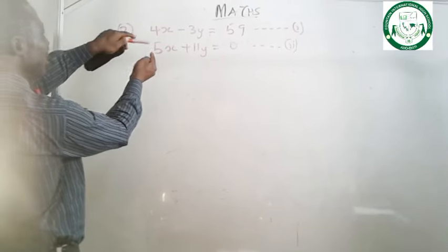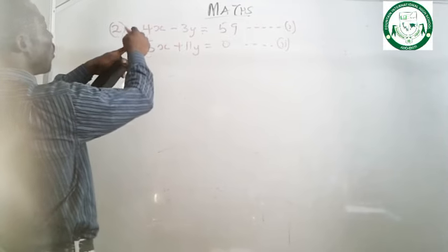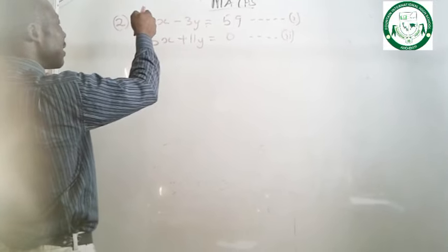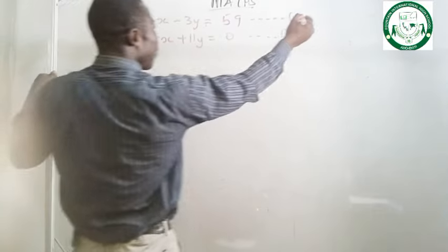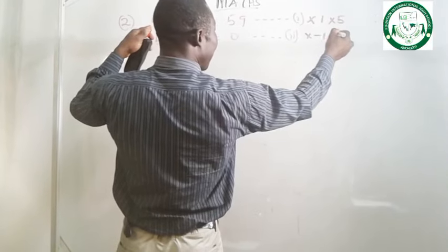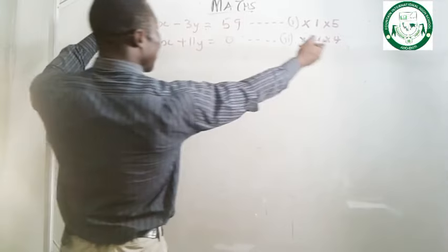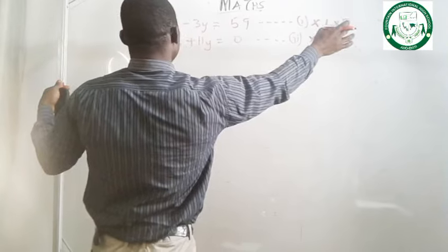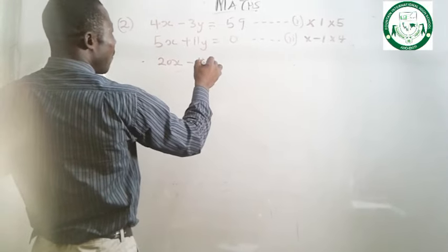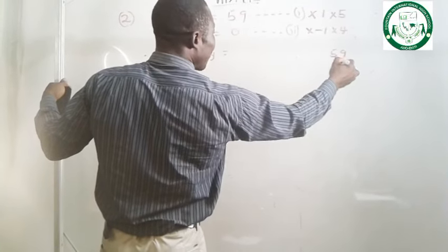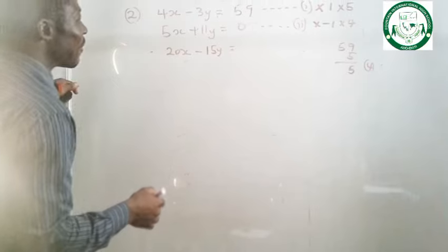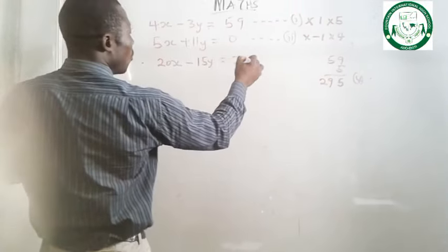We are going to eliminate the x terms by interchanging the numbers: taking 5 to equation 1 and bringing 4 to equation 2, with a sign change on one. We multiply equation 1 by 5 and equation 2 by minus 4. So 5 times equation 1 gives 20x minus 15y equals to 295 (since 5 times 59 equals 295).